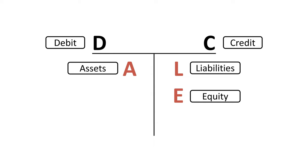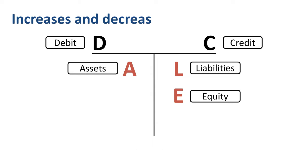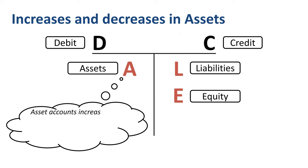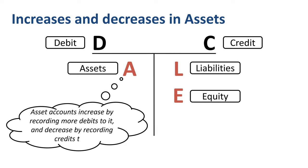Assets are things that a company owns. How do assets increase? How do assets decrease? The normal balance of an asset account is debit. Asset accounts increase by recording more debits to it, and decrease by recording credits to it.